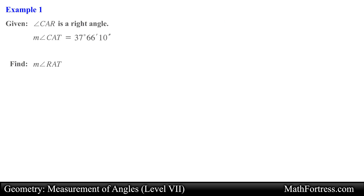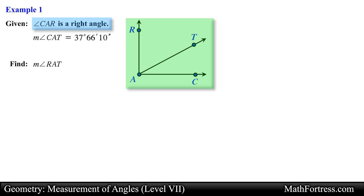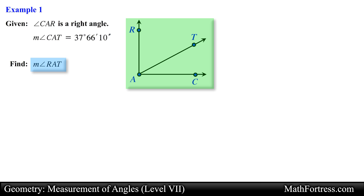Let's take a look at the first example. Given that angle CAR is a right angle and the measurement of angle CAT is equal to 37 degrees 66 minutes 10 seconds, find the measurement of angle RAT. In this problem we are provided with a figure, a classification of an angle, and the measurement of an angle. We are asked to determine the measurement of an angle.